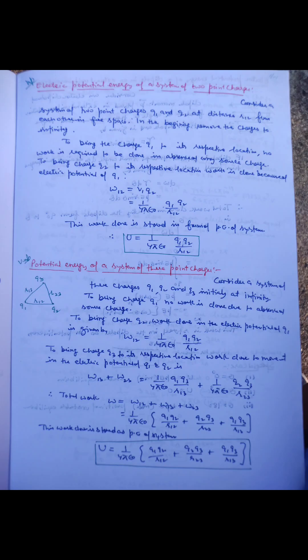A surface which has the same potential at every point is called an equipotential surface. No work is done to move a test charge over an equipotential surface, and the electric field is always normal to it. Equipotential surfaces indicate regions of strong or weak electric field. Two equipotential surfaces cannot intersect each other because at the point of intersection there would be two directions of electric field, which is not possible.